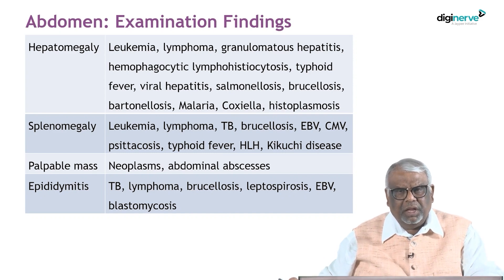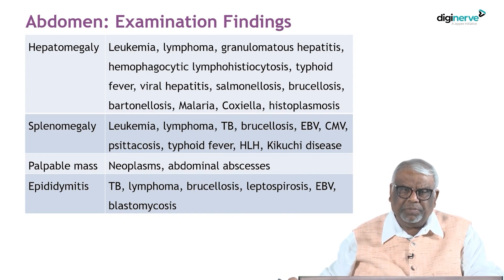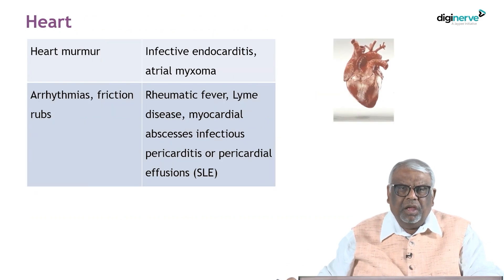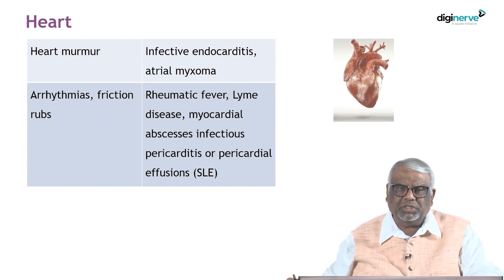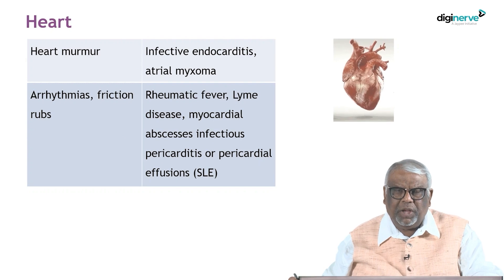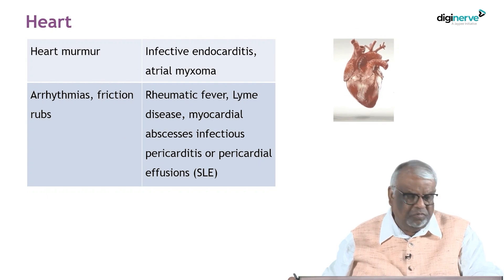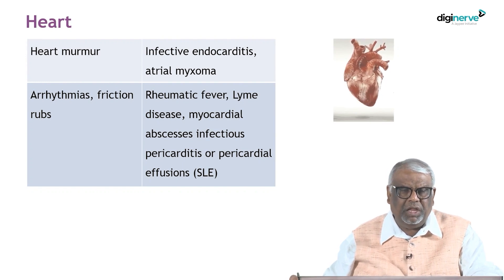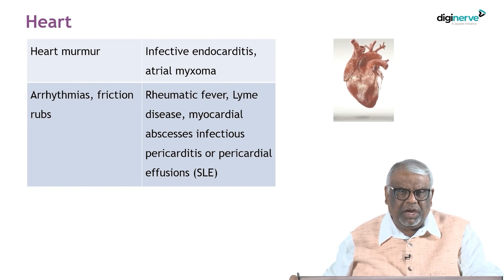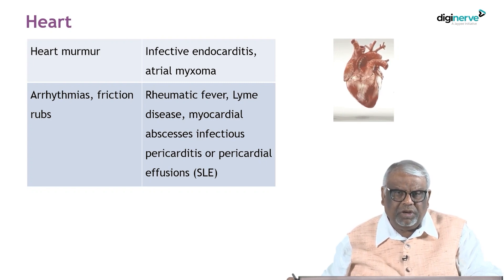A palpable abdominal mass usually suggests neoplasm or abdominal abscess. A heart murmur — the most important cause is infective endocarditis, and atrial myxoma is another important condition to keep in mind. Friction rubs are characteristic of pericarditis; think of rheumatic fever, Lyme disease, and myocardial or infectious pericardial diseases.